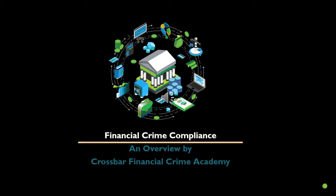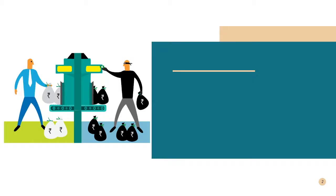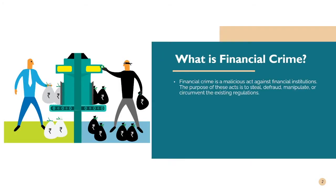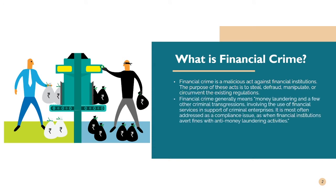Financial crime compliance — an overview by Crossbar Financial Crime Academy. Financial crime is the malicious act against financial institutions with purposes of stealing, defrauding, manipulating, or circumventing existing regulations. It includes money laundering and other criminal transgressions including bribing and tax evasion, involving the use of financial services in support of criminal enterprises. It is estimated that financial crime is the most profitable industry in the world at 2.1 trillion dollars, and also the most damaging.